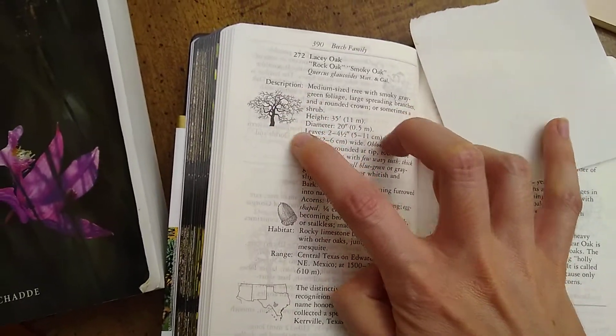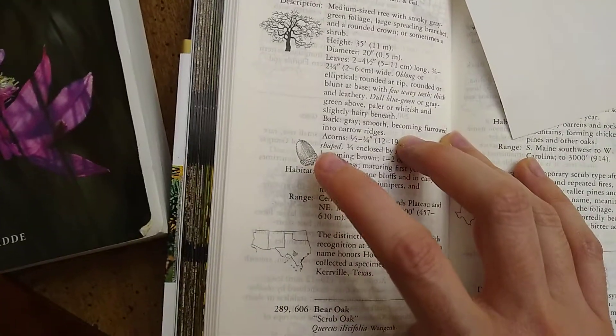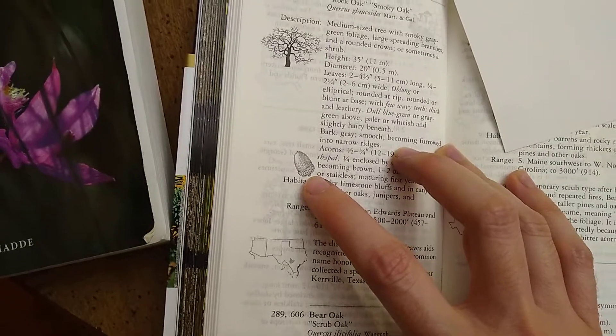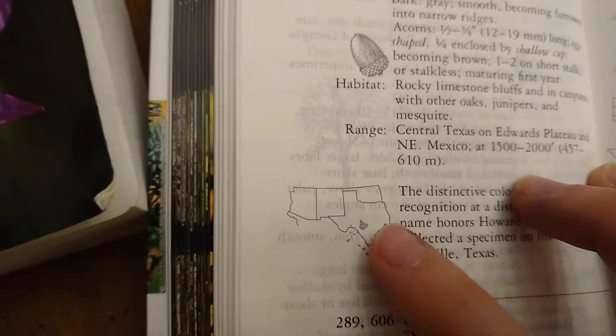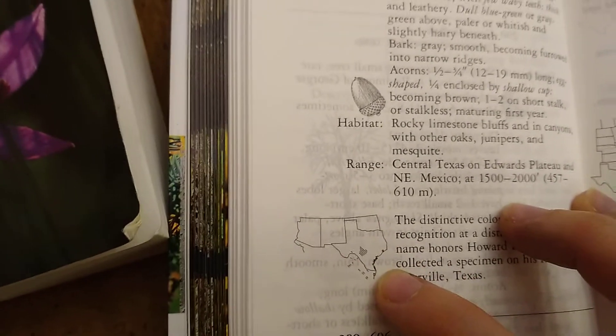The picture of the whole plant and some distinguishing features, such as the acorn. And also a map here showing the range of growth.